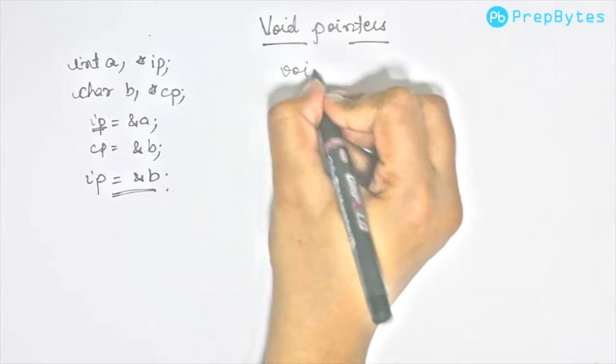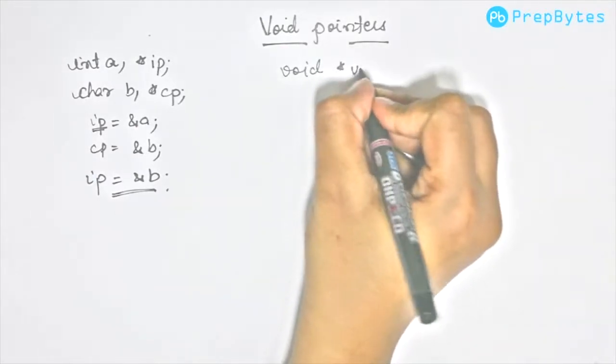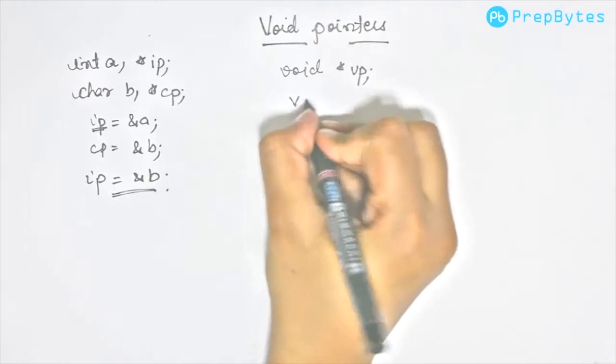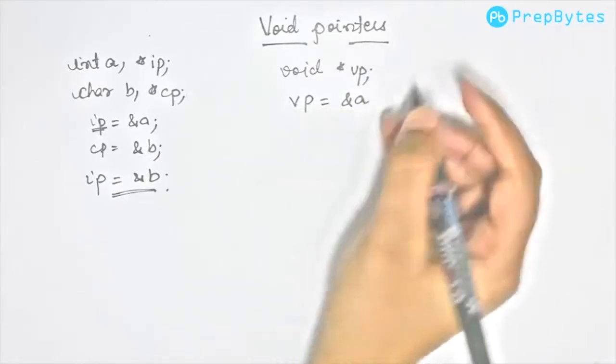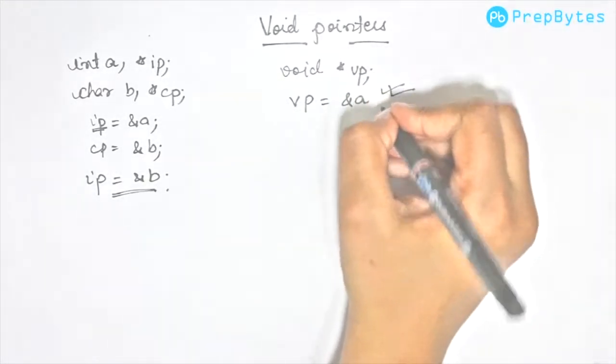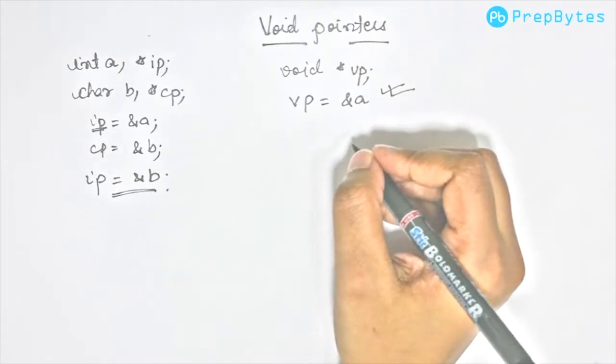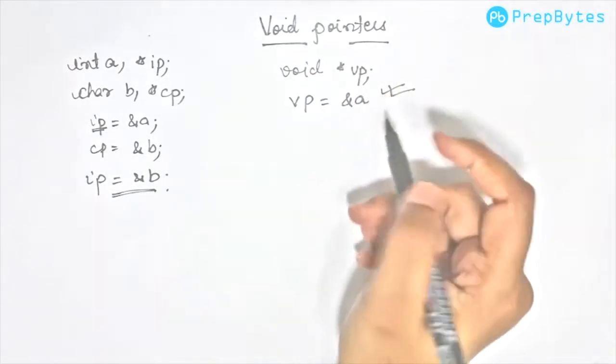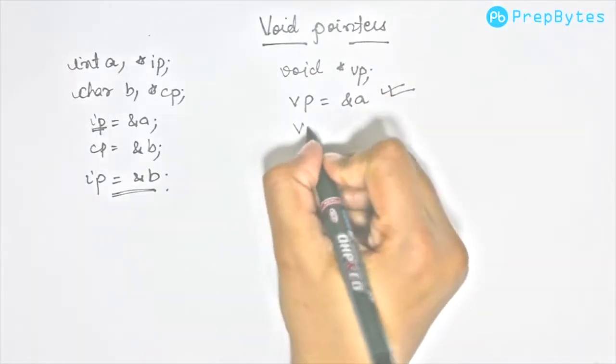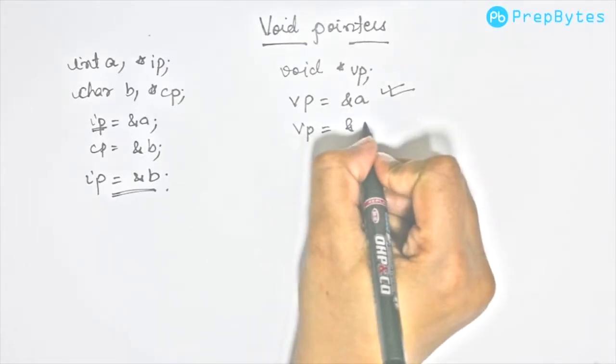So if we write void *vp and we write vp = &a, this is perfectly fine. We can also do vp = &b.